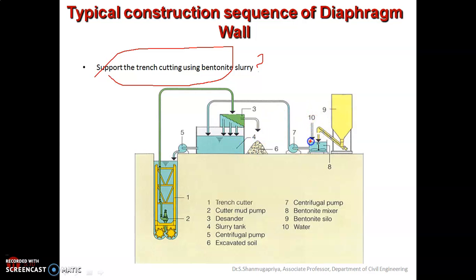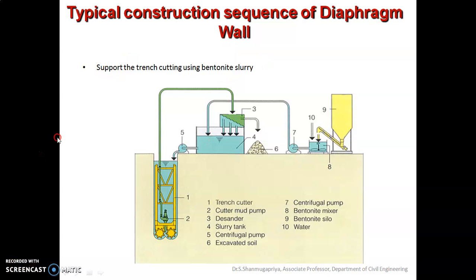The bentonite plant consists of the bentonite silo, the bentonite mixer, the de-sander, the slurry tank, and the pump which is used for pouring the bentonite slurry into the trenches. After the process is over, you can also displace the bentonite slurry out of the excavation trenches. So the third step involves supporting the excavation trench cutting using this clay material called bentonite slurry.